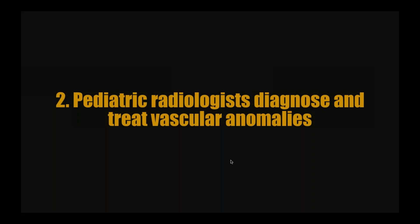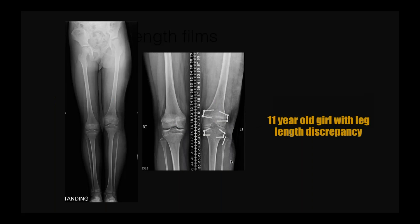Another cool thing about pediatric radiology is that pediatric radiologists diagnose and treat vascular anomalies. This patient has a number of problems — one is a limb length discrepancy. In pediatrics we see a lot of patients with limb length discrepancy. In this case it's hemihypertrophy or limb overgrowth — you can see how much longer the patient's left femur is compared to their right, and the left tibia is longer than the right tibia. She underwent epiphysiodesis — surgical closure of the epiphyses of the long bones — stapling across the physis to prevent future growth and allow the shorter bone to catch up. After epiphysiodesis, the knee joint more closely approximates the height of the overgrown left side.